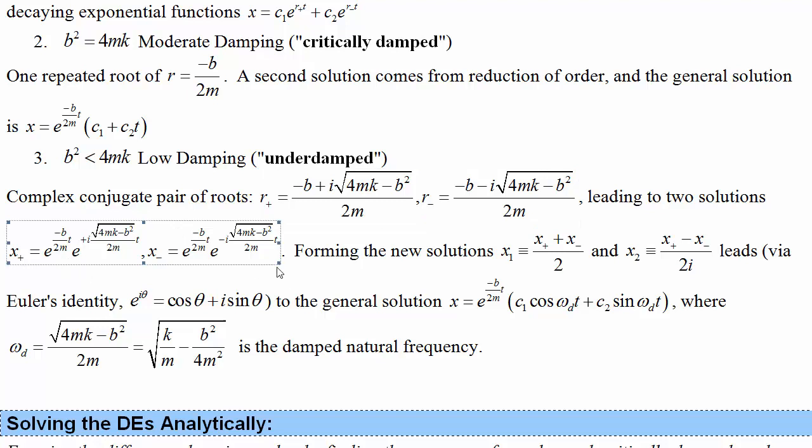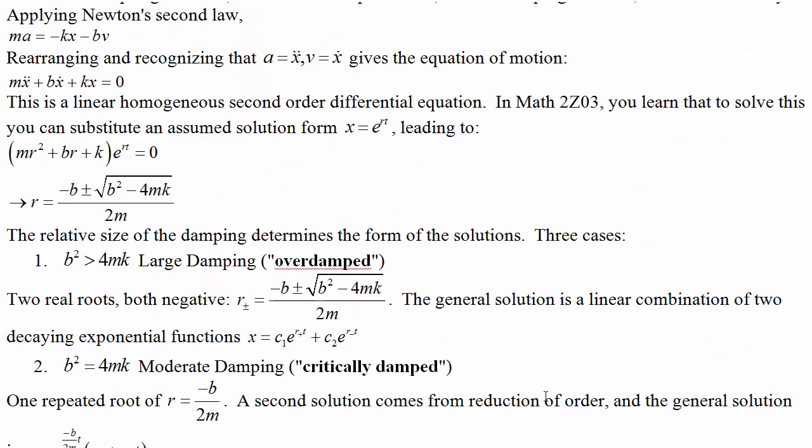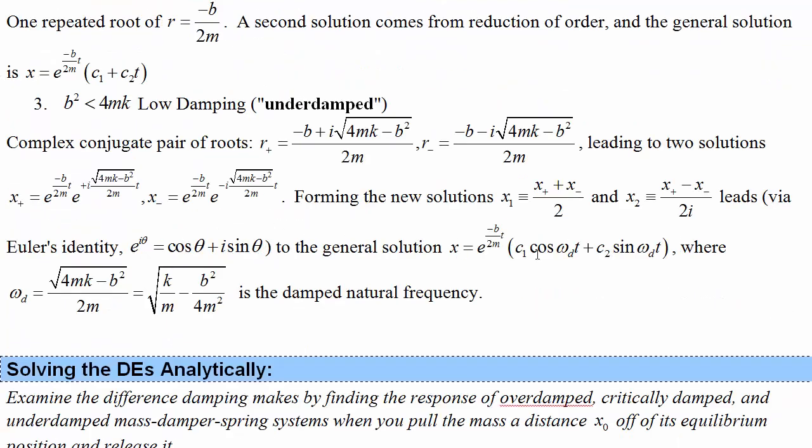When we substitute back in, we get complex exponents. If we form new solutions by taking a linear combination of these two, then you can rewrite using Euler's identity as a cosine and sine term. You can also use the same linear combination pair on the real solutions up here in the next section to get cosh and sinh hyperbolic solutions.